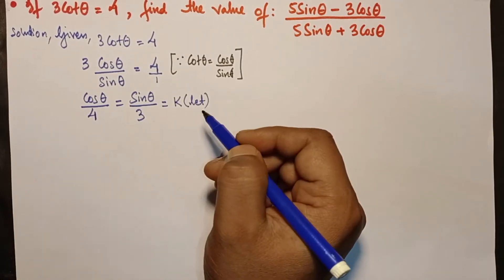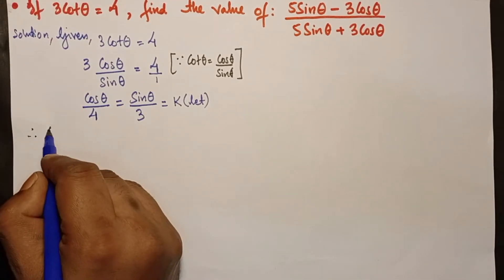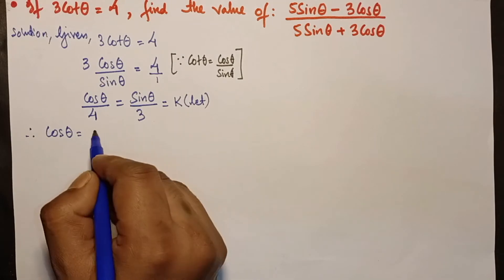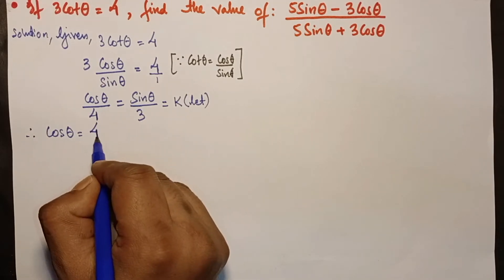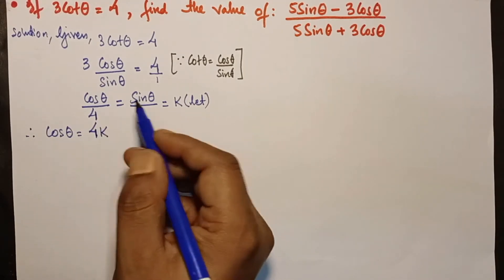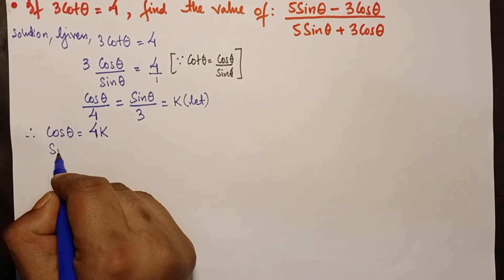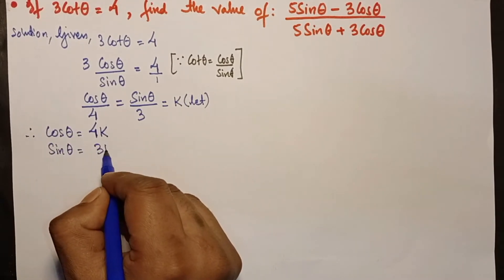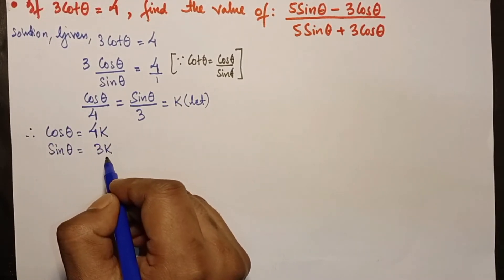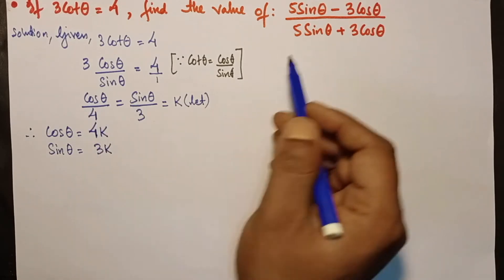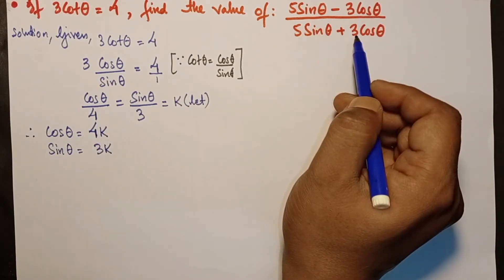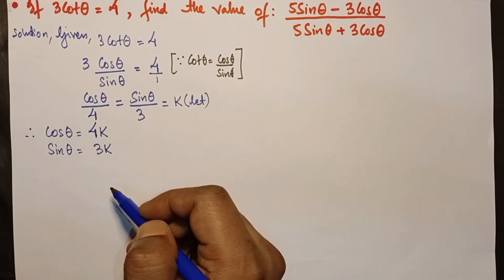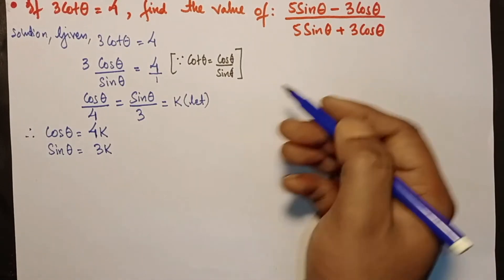Therefore: cosθ = 4k and sinθ = 3k. This method is the easiest, but it is only applicable when both sides match. Now we will find the value of the expression.